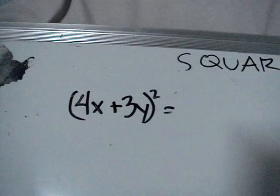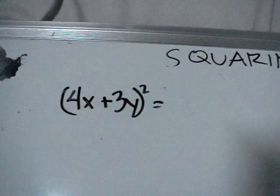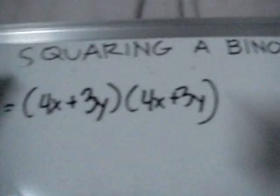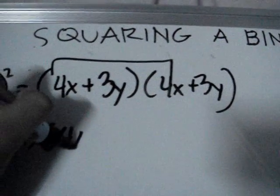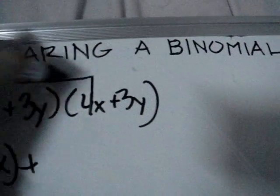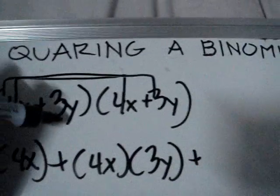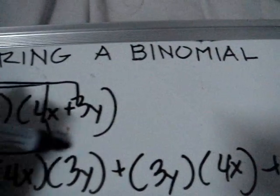Now let's put it in action. Take the expression (4x + 3y) squared. This equals 4x plus 3y multiplied by 4x plus 3y — equal to the first term, 4x multiplied by 4x, plus the outer term, 4x multiplied by 3y, plus the inner term, 3y multiplied by 4x, plus the last term, 3y multiplied by 3y.